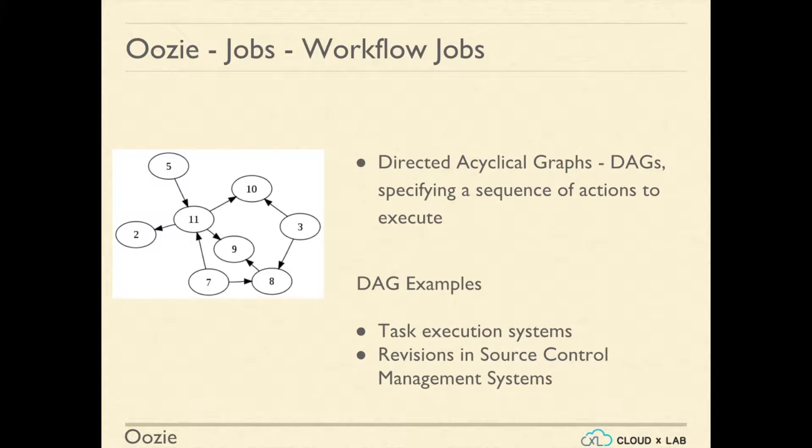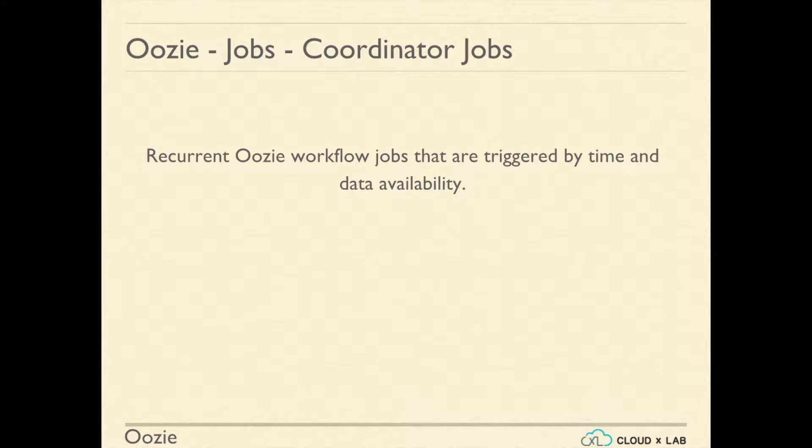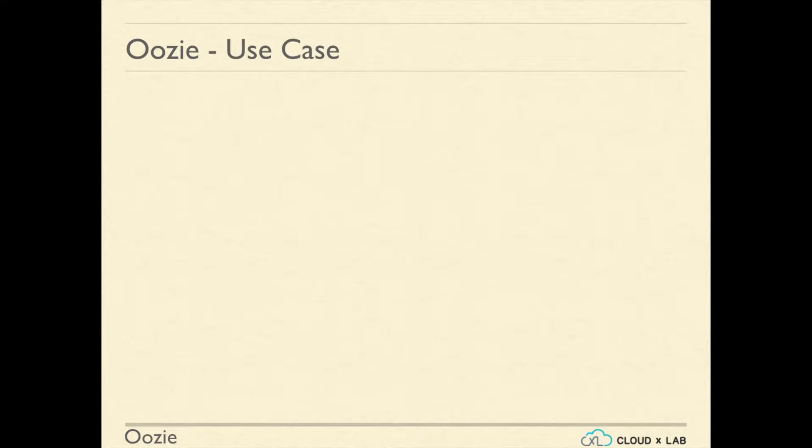Oozie coordinator jobs are recurrent Oozie workflow jobs that are triggered by time and availability of data. Let's take an example of a workflow. Say, if we want to take data from HDFS and put into Hive every hour. One can define a workflow in Oozie to take the data from HDFS and put into Hive and run it as a coordinator job.